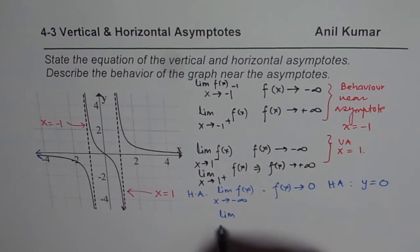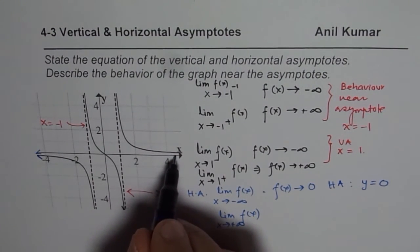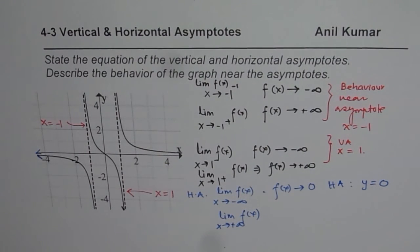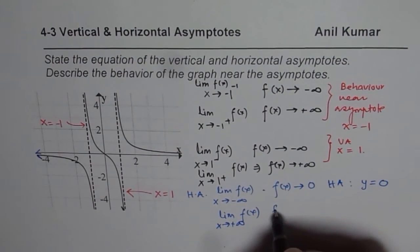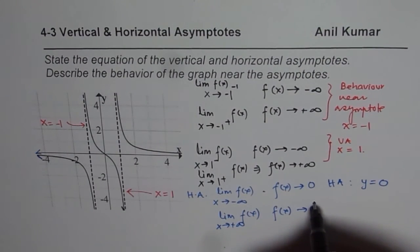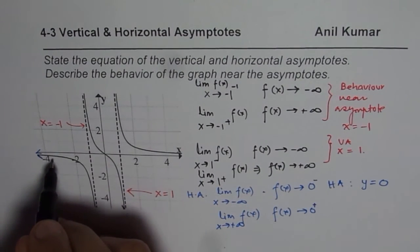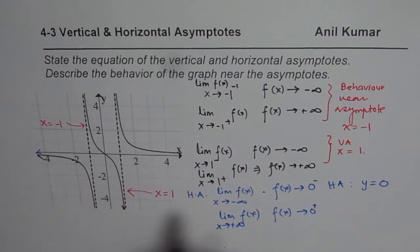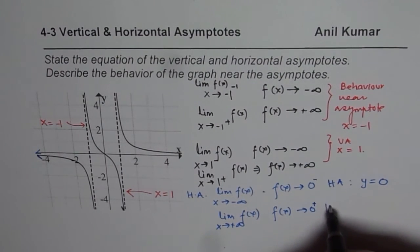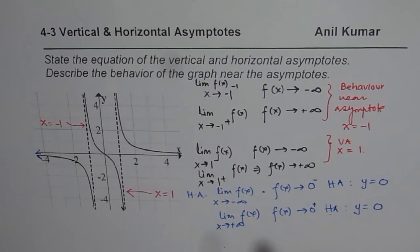Similarly, the limit of the function as x approaches positive infinity is also 0, though in this case the function approaches 0 from the positive side — a different approach direction compared to the negative infinity case, where it approaches from the negative side in the third quadrant. In both cases, the horizontal asymptote is y equals 0, since the function is approaching the value 0.